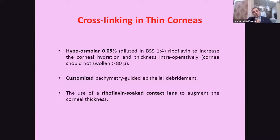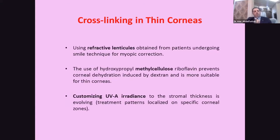We can also use a riboflavin-soaked soft contact lens — one without ultraviolet protection — or use a refractive lenticule. If a SMILE technique was performed earlier the same day, the refractive lenticule can be soaked with riboflavin and placed in the corneal pocket. Hydroxypropyl methylcellulose riboflavin can be used to prevent corneal dehydration. Additionally, customized ultraviolet irradiation matched to stromal thickness is an evolving technique, allowing selective irradiation of specific areas of the cornea.